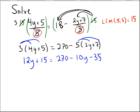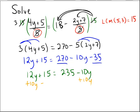Now collecting the like terms: 12y plus 15 remains unchanged; 270 minus 35 is 235 minus 10y. I can collect like terms by adding 10y to both sides and subtracting 15 from both sides.